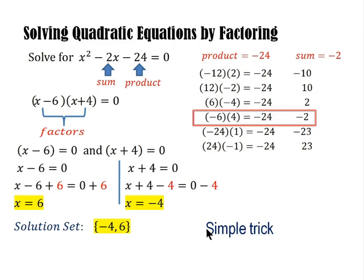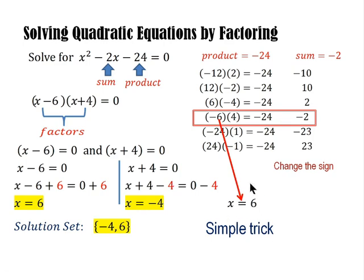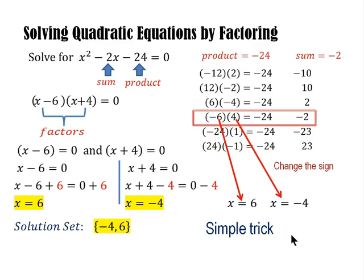Here's a simple trick: since our focus is to find the roots, once we know the factors, we just change the sign. From negative 6, change the sign to get x equals positive 6. From positive 4, change the sign to get x equals negative 4. You don't need the longer isolation process once you know the factors. The solution set is x equals 6 and x equals negative 4.